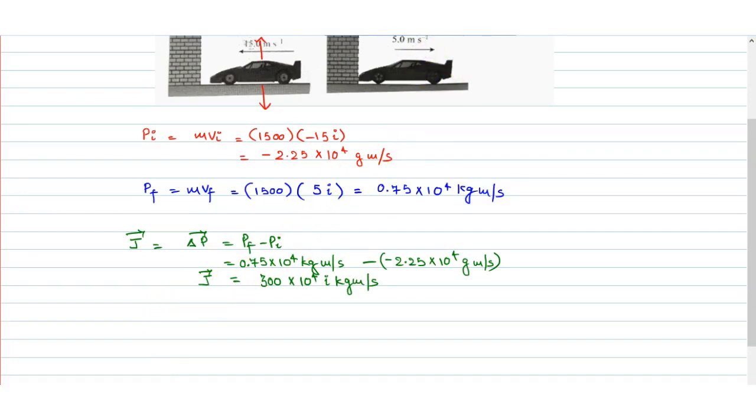So this is the impulse that we have to get is 3 into 10 power 4 i cap kg meter per second. And the average force, impulse divided by time has become 0.15, so we get 2.25 into 10 power 5 i cap newtons.